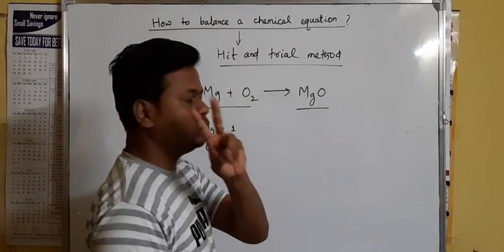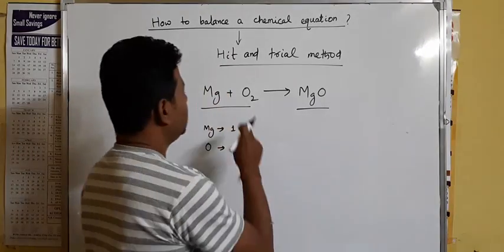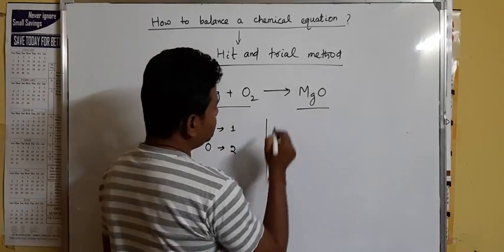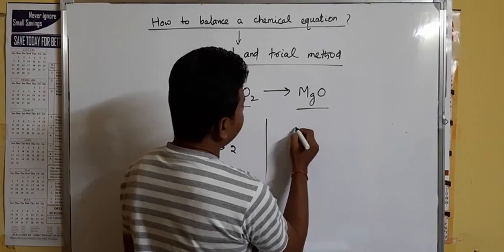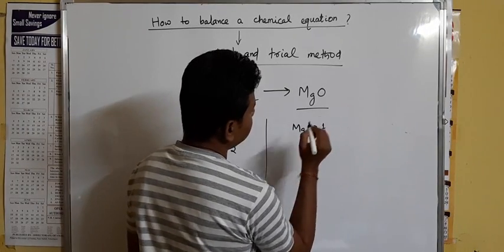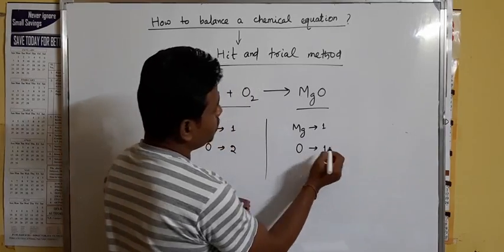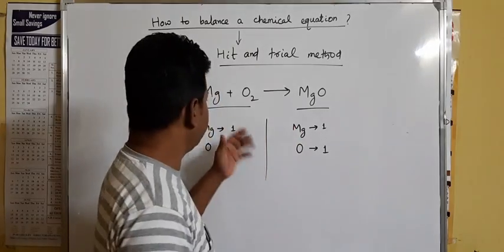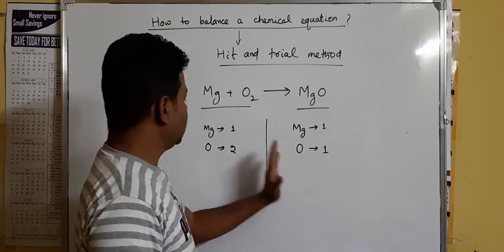Whenever O2 is written, it means two oxygen atoms — this is a molecule consisting of two oxygen atoms. So oxygen atom count is two and magnesium is one on the left side. On the right side, you will find the magnesium atom is one and oxygen atom is one. So the difference is that although the magnesium atom count is the same on both sides, the oxygen atom count is not.